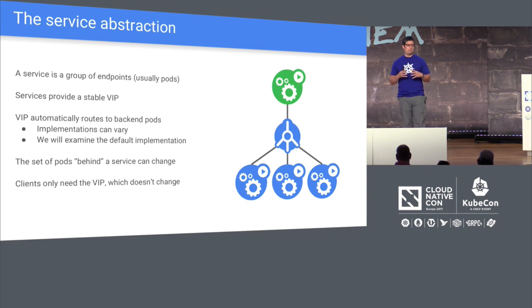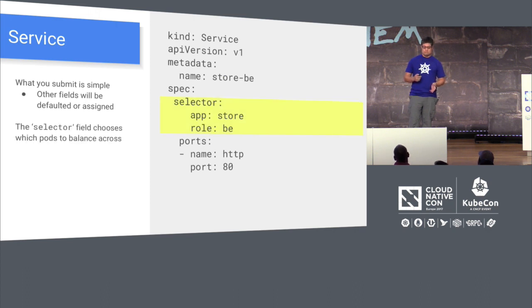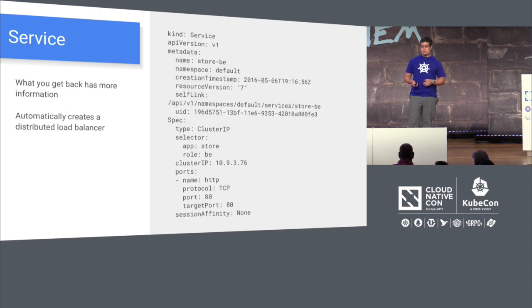A service is a handle to say this is going to be a group of workers, and here's how we want to get to these endpoints. A service will provide you a virtual IP address — a doorway where traffic will be evenly distributed across the workers behind it. Think of it like a restaurant: you have one waiter and a ton of great cooks behind the door. Here's a service you create with YAML. What matters is the selector — you select the type of pods you want traffic to go to, and Kubernetes automatically creates a distributed load balancer. It gives you the IP address to reach all of those services.